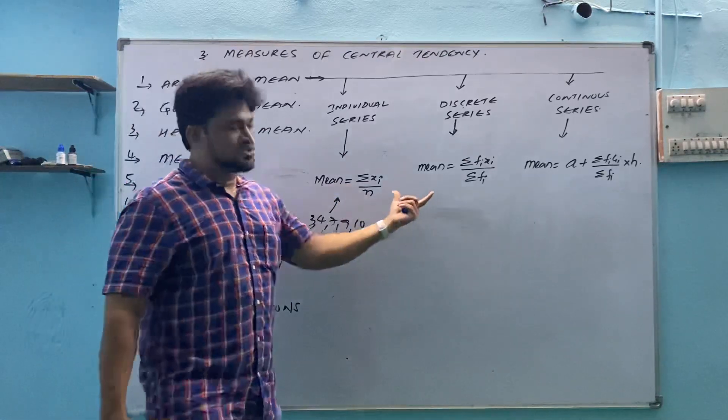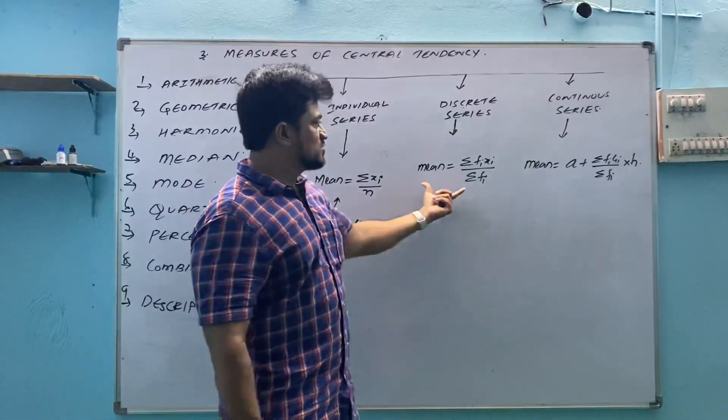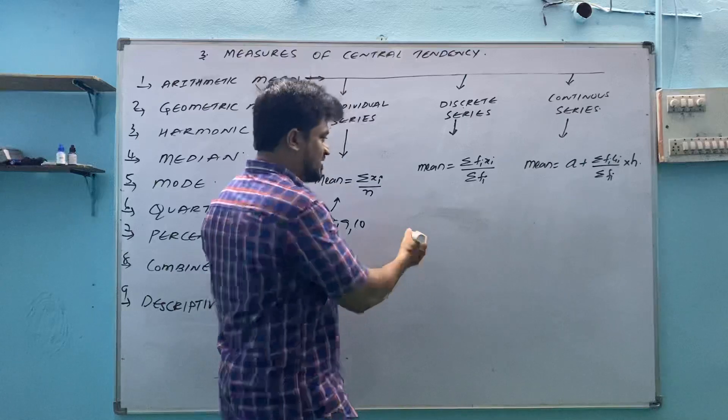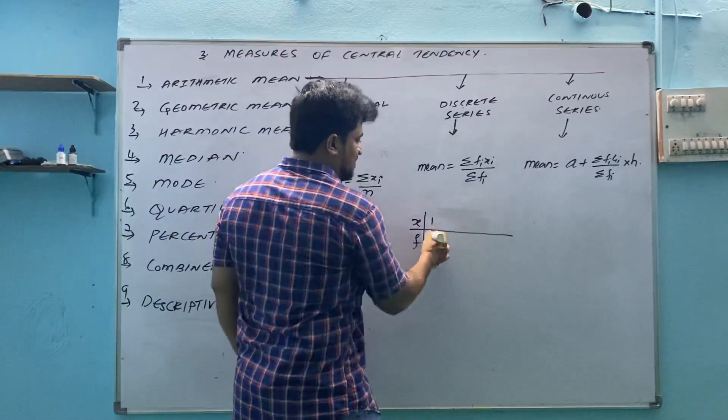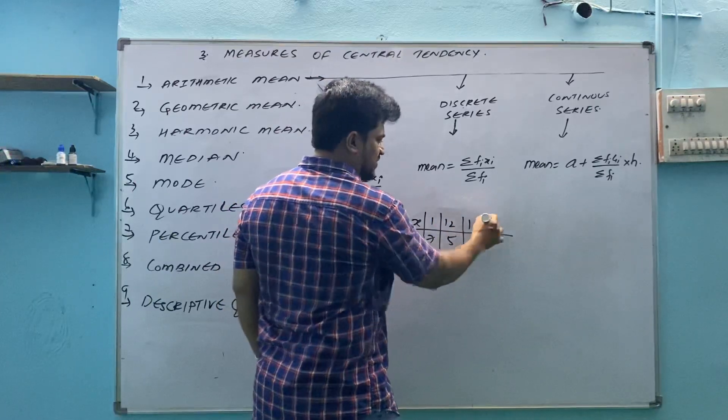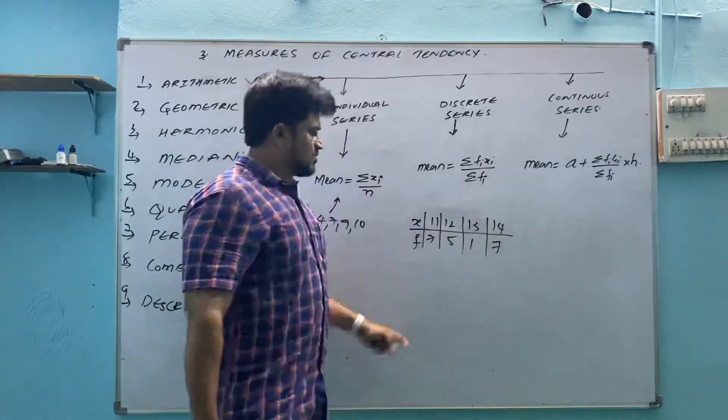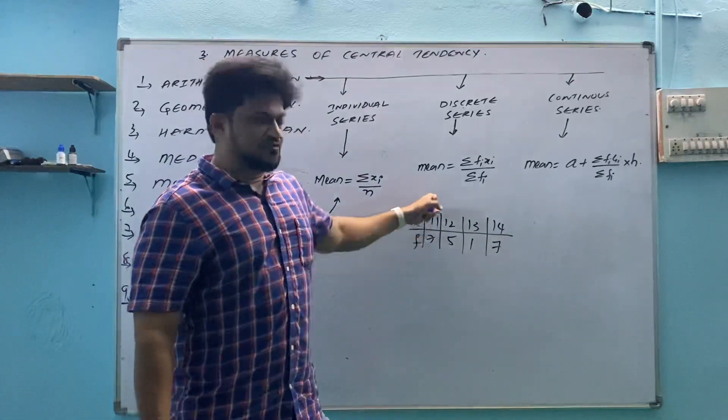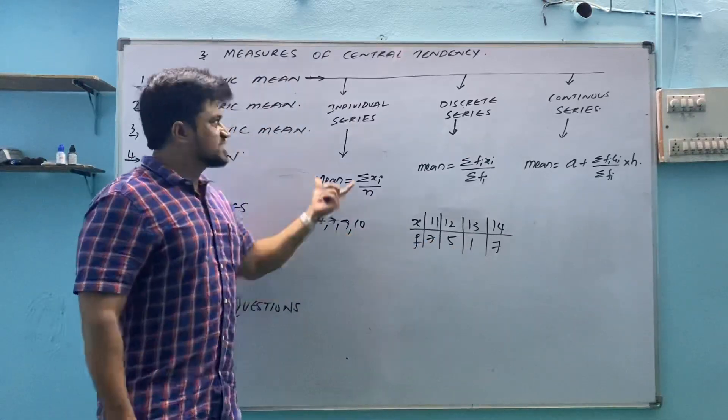Then second type of questions, discrete series questions. In discrete series questions, we will use this formula. How we can recognize discrete series? Some two variables are given to you, 1, 7, 12, 5, or in this way, they can give any information. By seeing such type of information in both the lines, we will be having values here. Individual values, that's the individual series. Here we have two set of values.